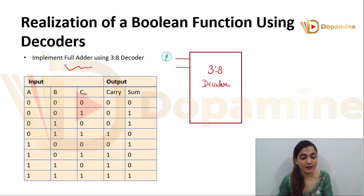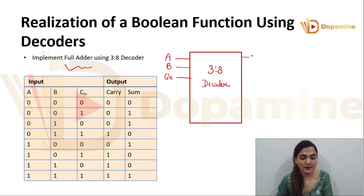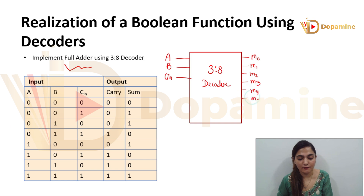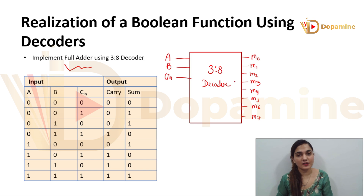So in the 3-to-8 decoder we have 3 inputs a, b and c. We have 8 outputs representing minterms m0 through m7.